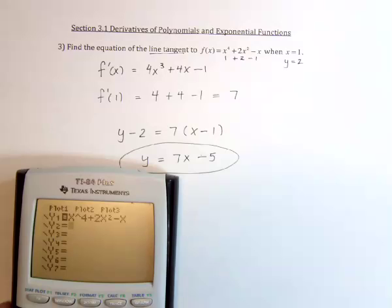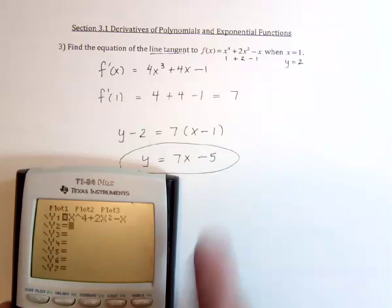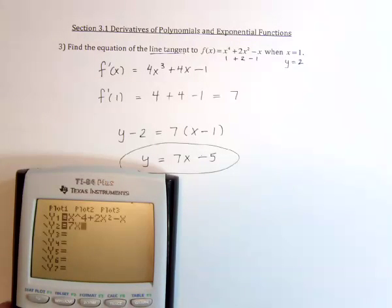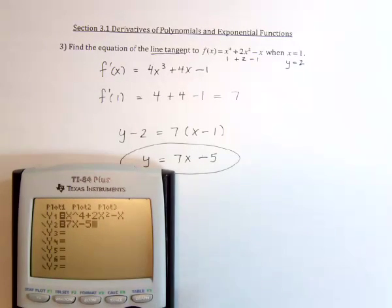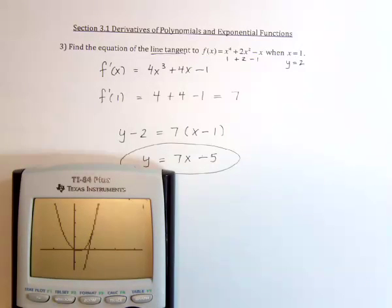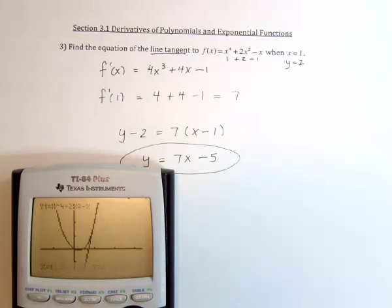And then if I also graph the equation of the tangent line, 7x minus 5, what should happen is it should touch the graph at that one point. So right here at x equals 1.